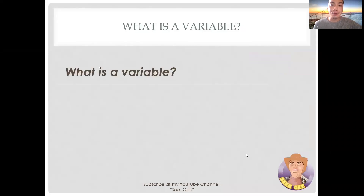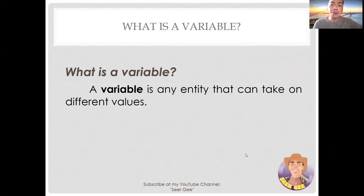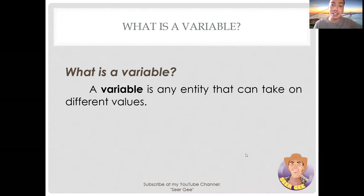So, what is a variable? When we talk about variable, it is anything that can take on differing or varying values. Anything that can vary can be considered a variable. For instance, age can be considered a variable because age can take different values for different people or for the same person at different times.